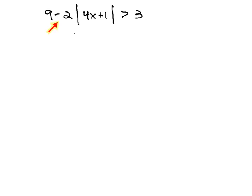However, we cannot combine them to get 7 because they are not like terms. The 2 has an absolute value with it while the 9 does not. We are also not allowed to distribute the 2 through an absolute value, because we're only allowed to distribute through normal parentheses, not absolute values.